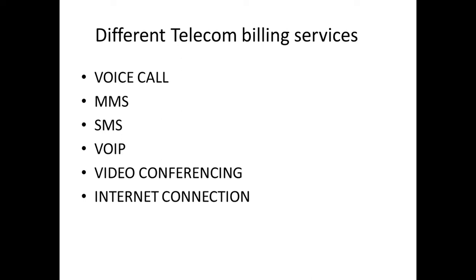The different types of telecom billing services — or the services we get a bill for — include voice calls, MMS, SMS, VoIP (Voice over Internet Protocol), video conferencing, and internet connection. These are the different telecom services provided by the telecom operator. As a customer, we pay bills for these services. In short, telecom billing means paying for the different services provided by the telecom operator.